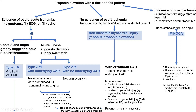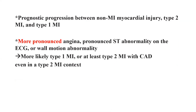There are four causes of MINOCA: coronary vasospasm, re-canalized or overlooked plaque rupture thrombosis with no significant disease left, myocarditis, and Takotsubo. Those are the four main ones.